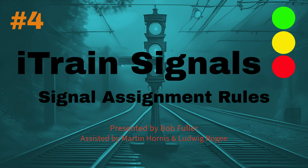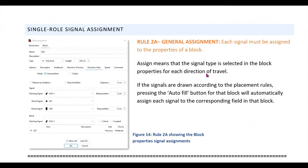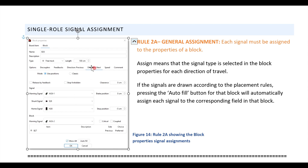It is assumed that the signals have already been drawn in the switchboard and defined. So let's jump straight in with Rule 2a, General Assignment. It states that each signal must be assigned to the block properties. Assign means the signal name is selected in the appropriate signal field for the direction of travel within a block's properties.